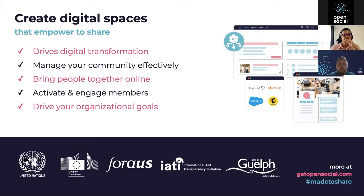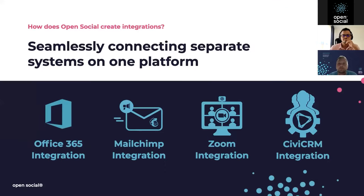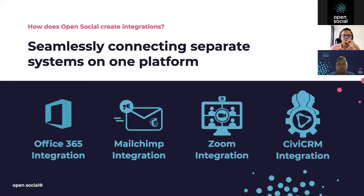Now let's talk about what we're actually discussing today: integrations between platforms and how they can help organizations create and manage their communities better. We offer many organizations the possibility to integrate different systems. We already have integrations with Office 365, Mailchimp, Zoom, and many others that I'll explain in a few minutes. But why are integrations so important? Why do we think that's the direction we want to go with Open Social?